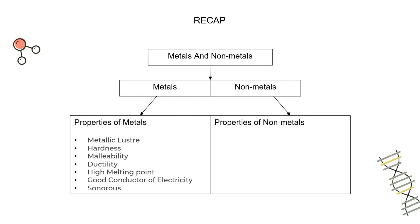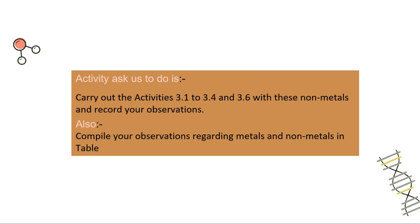So let's begin with our actual topic: properties of non-metals. In Activity 3.7, we are asked to carry out activities 3.1 to 3.4 and 3.6 with non-metals and record your observations. The non-metals we use are graphite, coal, sulphur and iodine. Also compile your observations regarding metals and non-metals in a table. You don't have to worry about the activities as we have done them for you and also compiled the observation table.